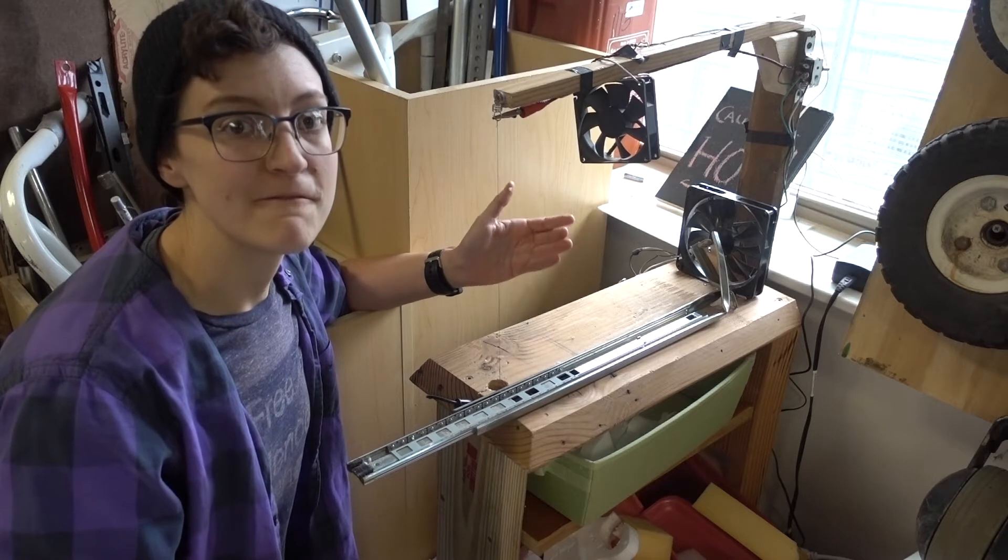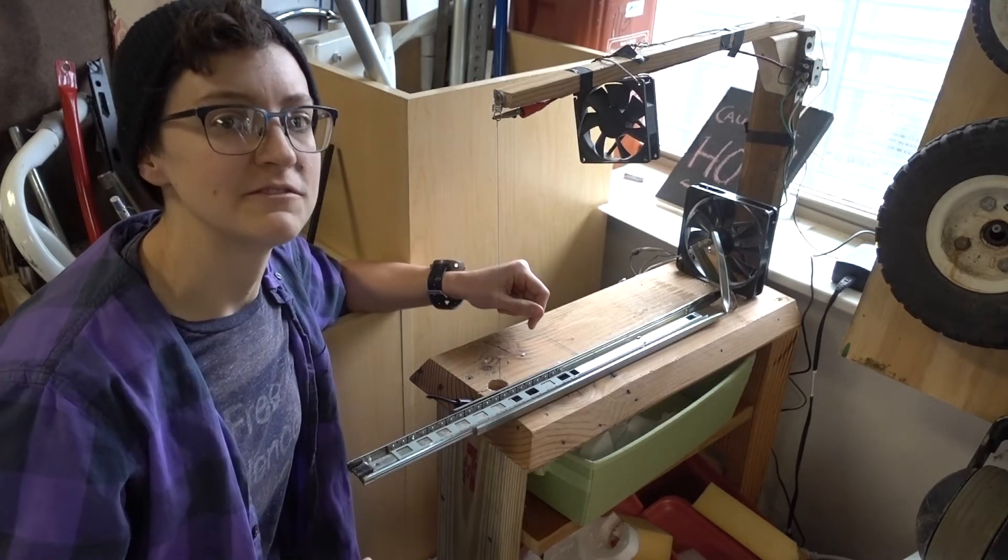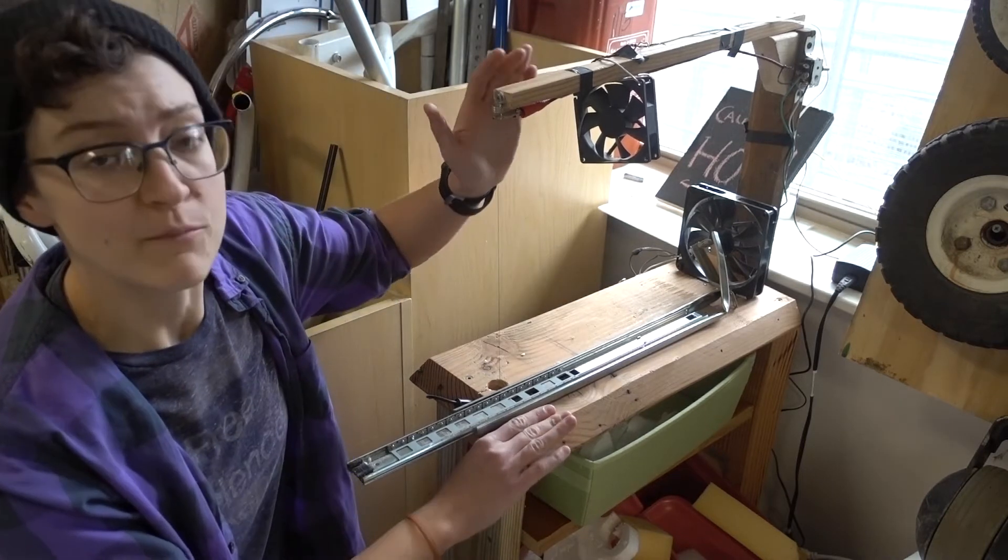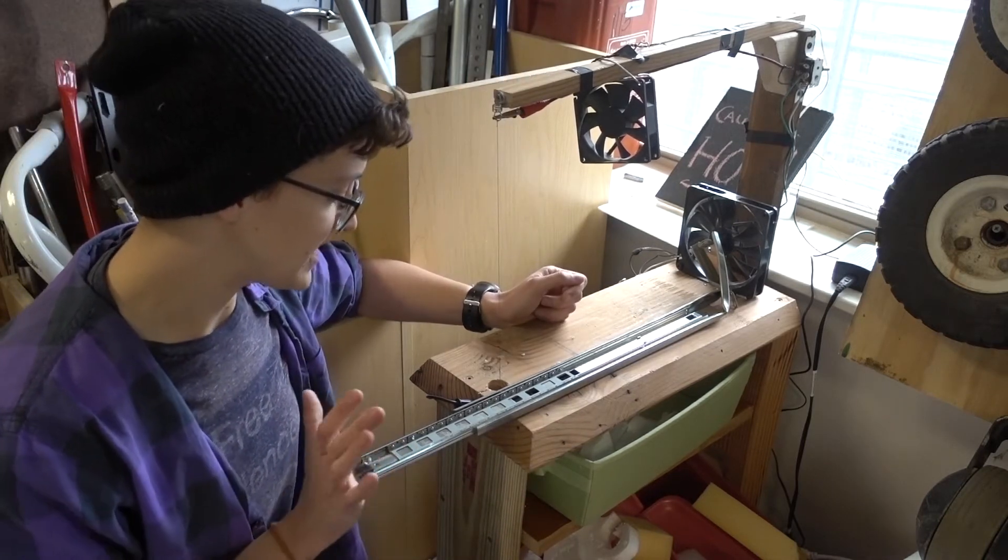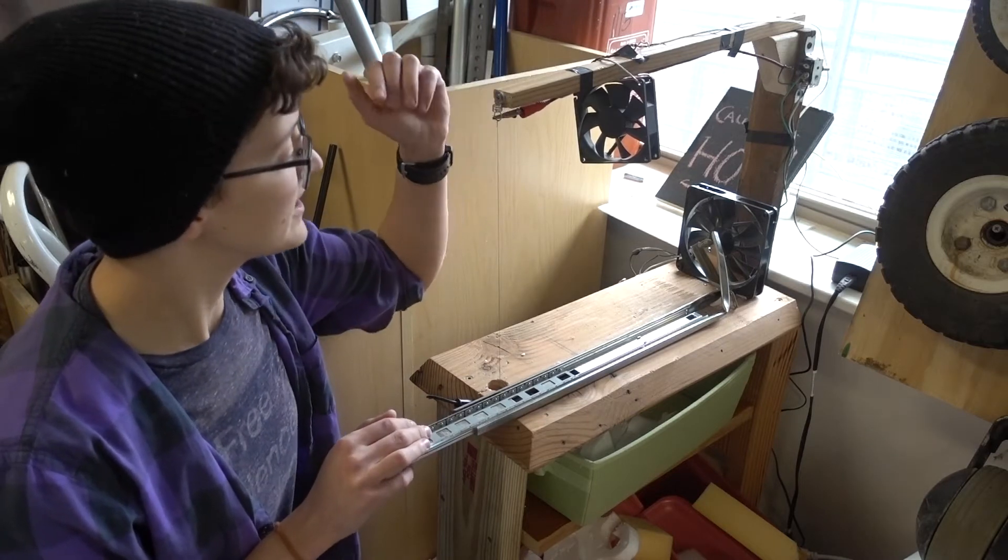This is our nichrome foam cutter and if you take a closer look you might be able to recognize some pieces we've salvaged from other projects. We've got a base made of scrap wood, some drawer poles to keep your distance from the nichrome wire here, alligator clips and springs,